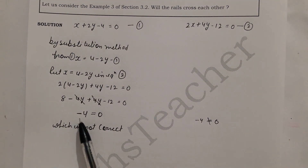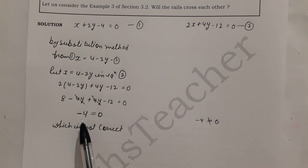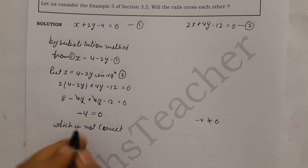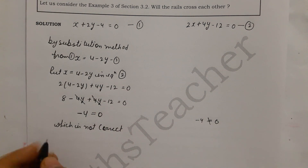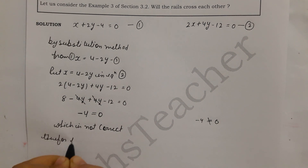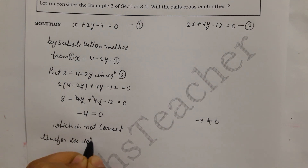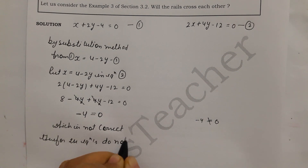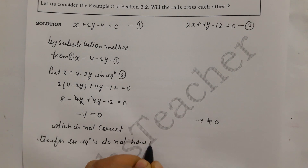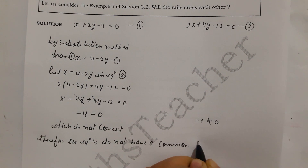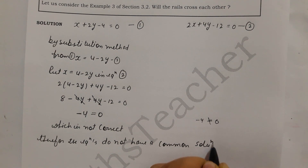Algebraically, if your resulting statement is wrong — like −4 = 0, which is not equal — then we will not get any solution. Therefore, the equations do not have a common solution.